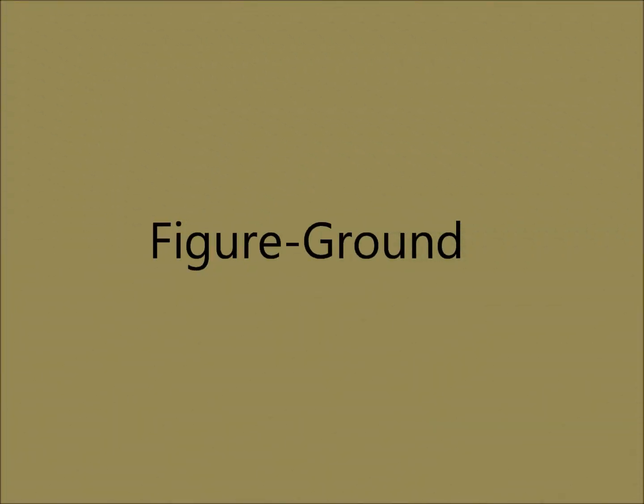We'll start with figure-ground. When we take in an image or scene, our brain has to decipher between what is important and what is background information. The object is the figure — the thing that we focus on. The ground is the background, whatever is less important at the moment. In this famous optical illusion, the figure and ground reverse based on how you look at it.